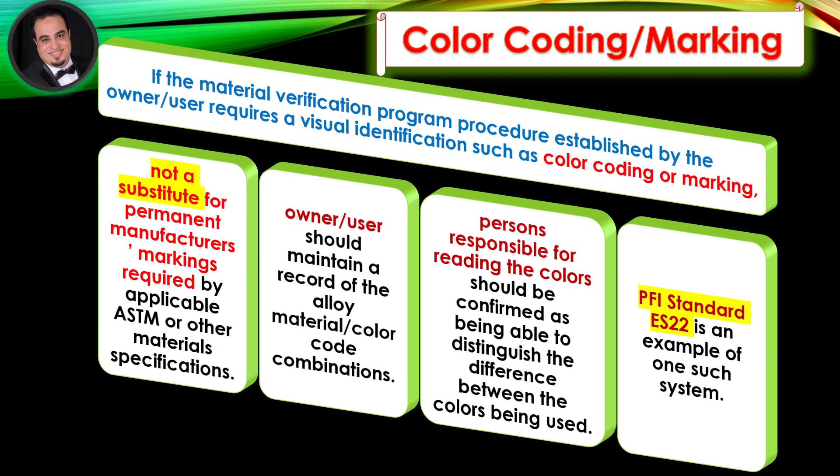Color-coding marking: If the material verification program procedure established by the owner-user requires a visual identification, it is not a substitute for permanent manufacturer's markings required by applicable ASTM or other materials specifications. The owner-user should maintain a record of the alloy material color code combinations. Persons responsible for reading the colors should be confirmed as being able to distinguish the difference between the colors being used. PFI Standard ES-22 is an example of one such system.